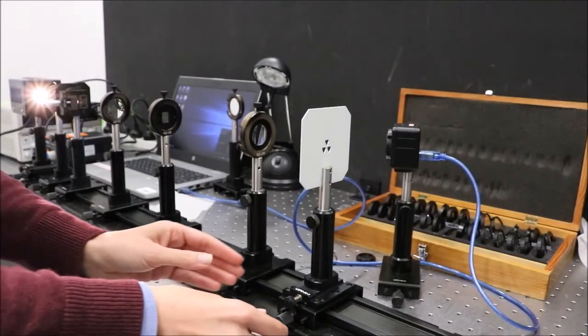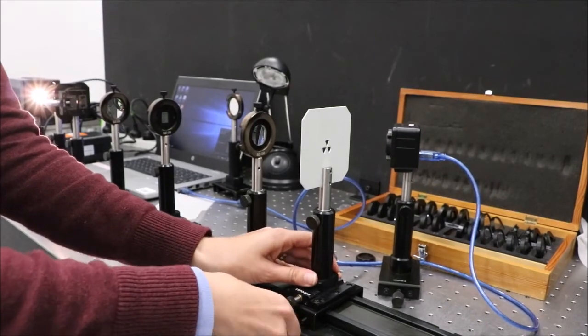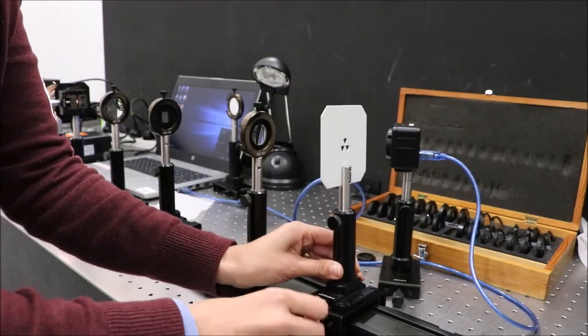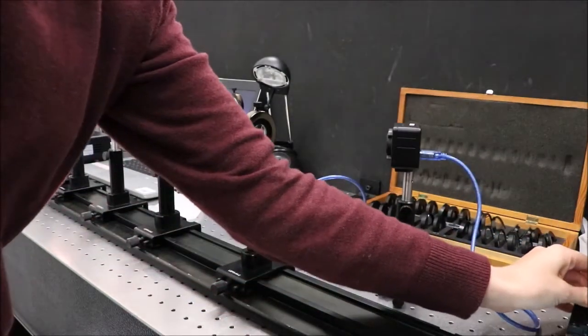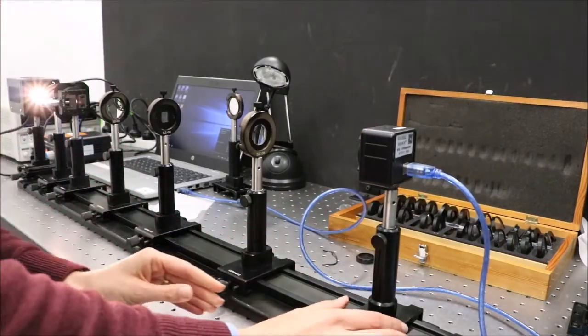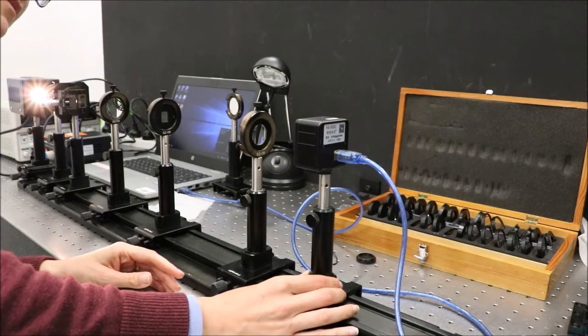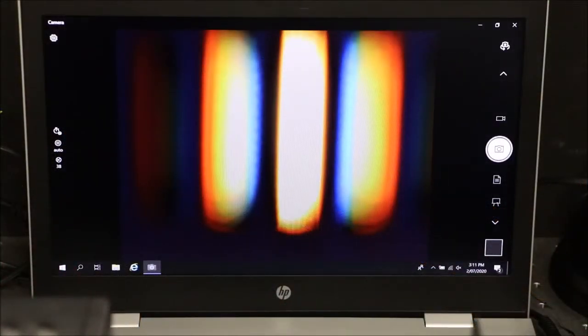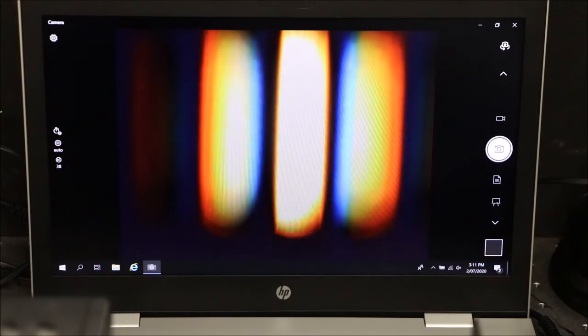Now we'll remove the screen and replace it with a camera that has no lens on it. We've opened the image capture software and put the camera in approximately where the white screen is located. We will focus the camera by moving it along the rail.